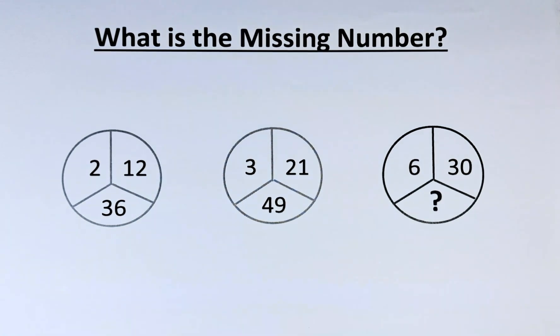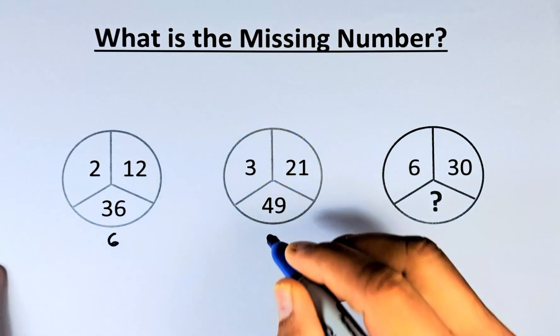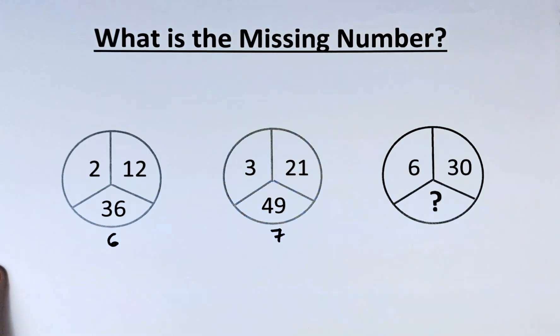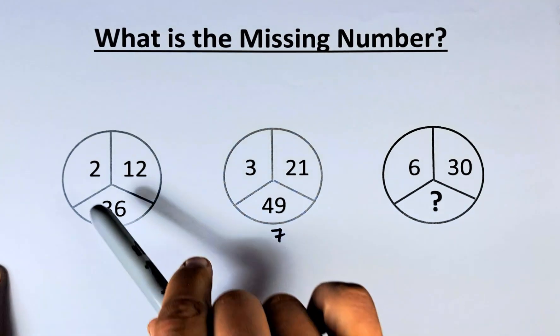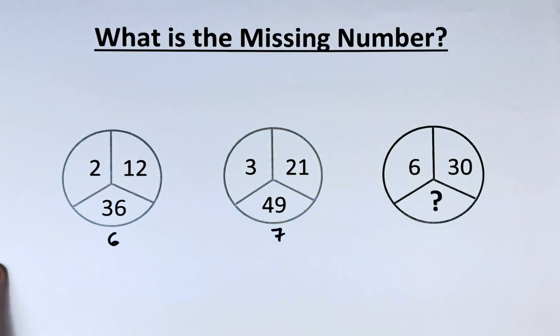The solution is as follows. The first thing you need to do is square root 36. The square root of 36 is 6. The square root of 49 is 7. And if you can see that, then 6 multiplied by 2 is 12. 7 multiplied by 3 is 21.